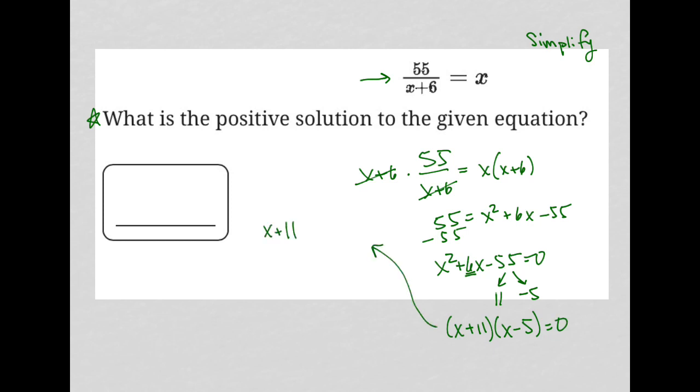So the solutions to this would be x plus 11 equals 0, in which case we get x equals negative 11, and x minus 5 equals 0, in which case we get x equals positive 5.